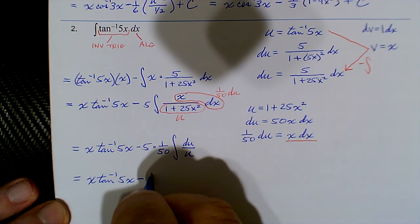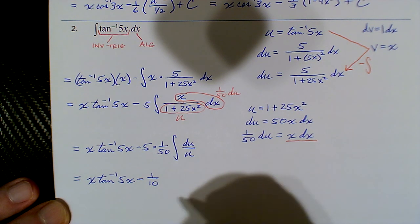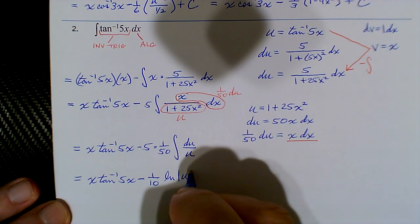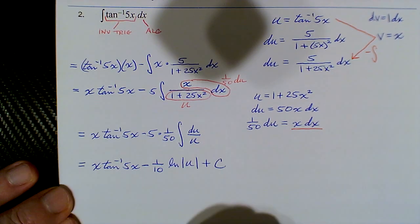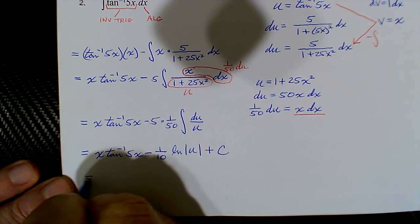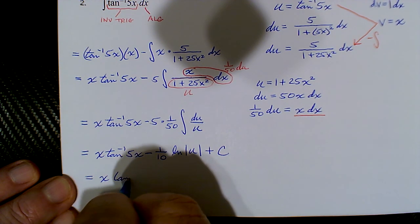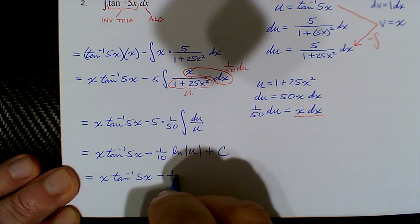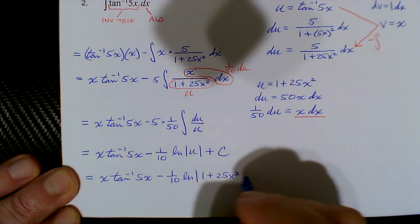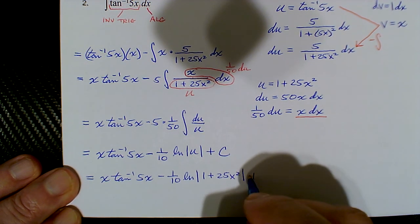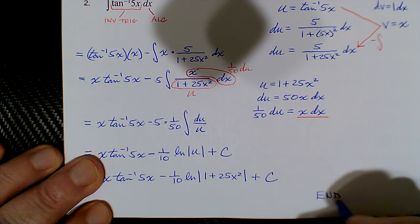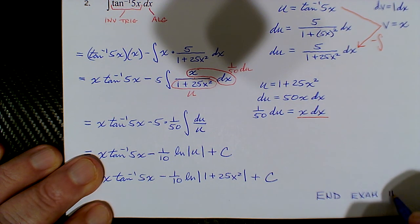Back-substituting: x·arctan(5x) minus 1/10 times the natural log of the absolute value of (1 plus 25x²), plus the constant C. That's the end of the material for Exam 2. I have a review sheet posted in Blackboard, and I'm going to make some video lectures of selected solutions to selected review problems. We'll be going over those in class as well — see you when you're ready.